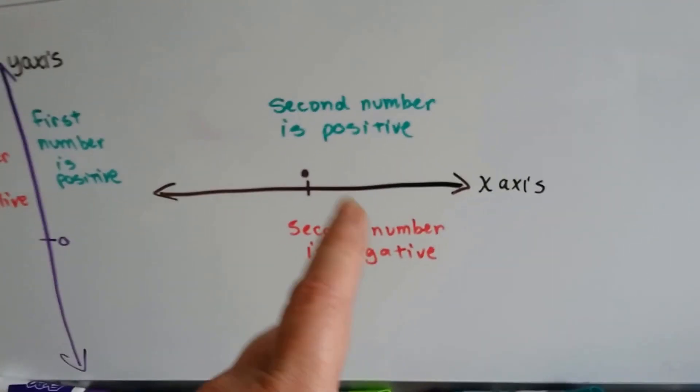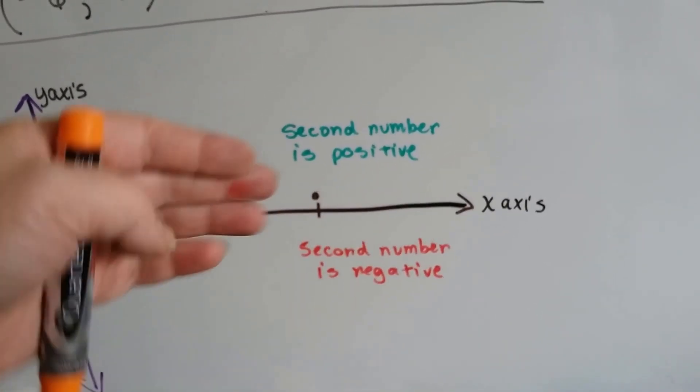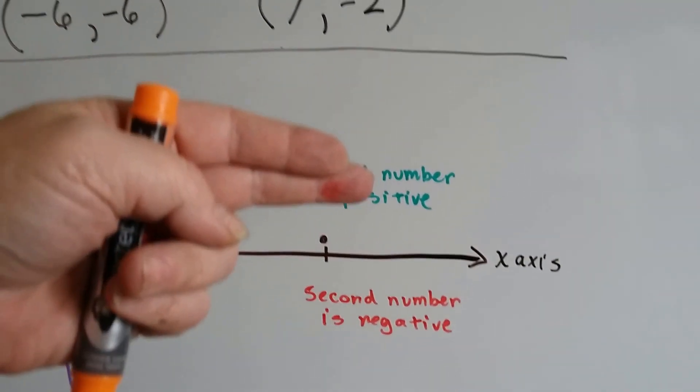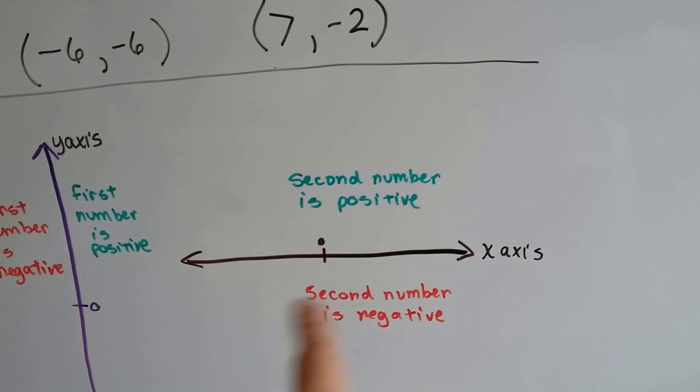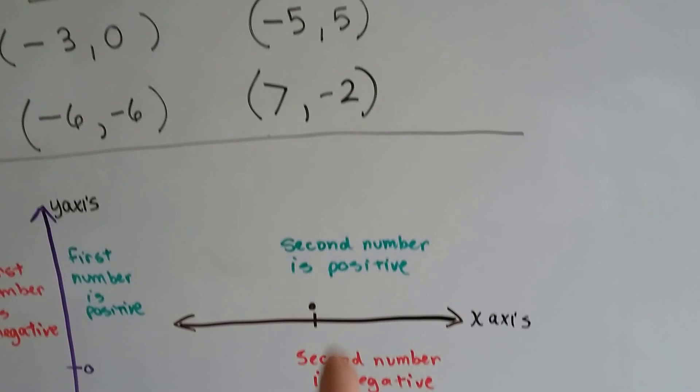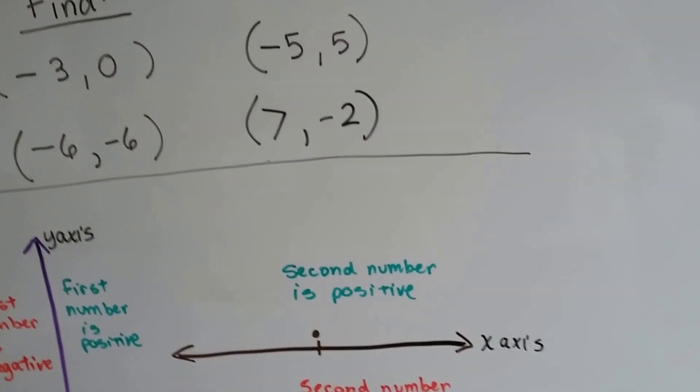For the x-axis, when the number is a positive number, it's found above the x-axis up here. Here's a second number that's negative. That means it's going to be found below the x-axis line. When it's positive, that means it's above the x-line.